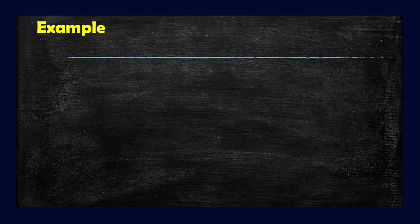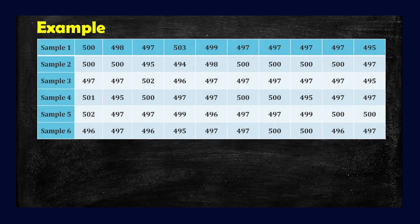So we consider this example. We have here 6 groups of sample and each group has 10 data each. Sample 1 has 500, 498, 497, 503, 499, 497, 497, 497, 497, and last is 495.